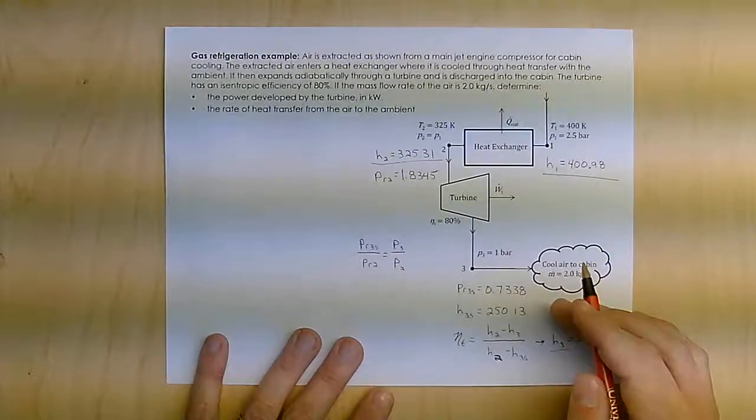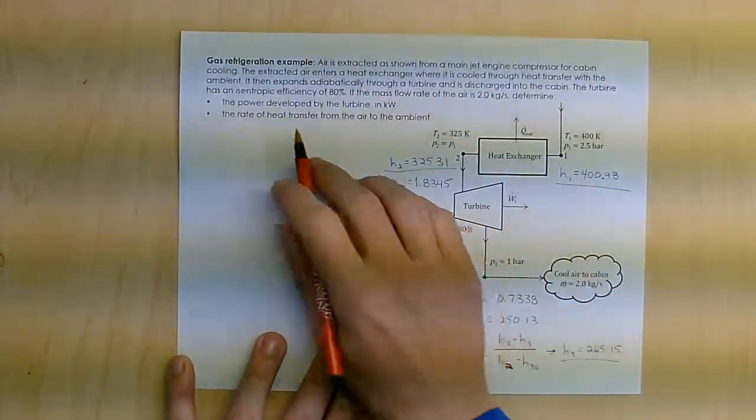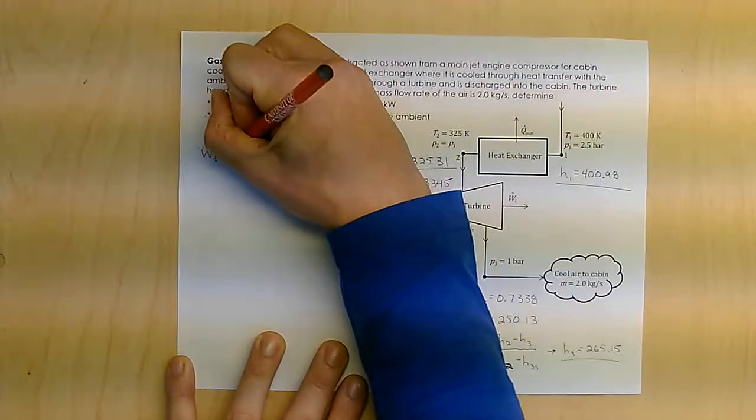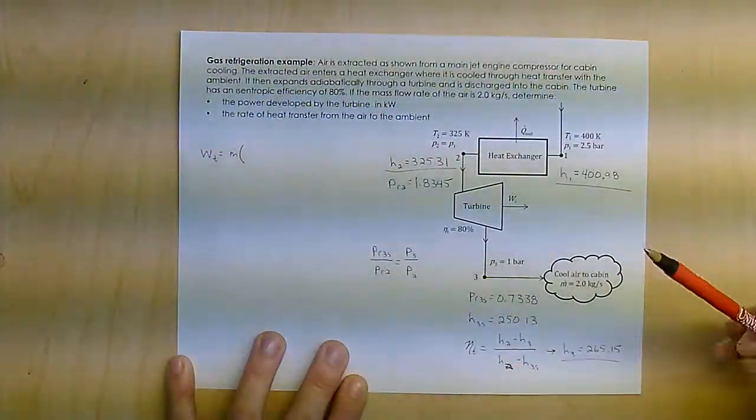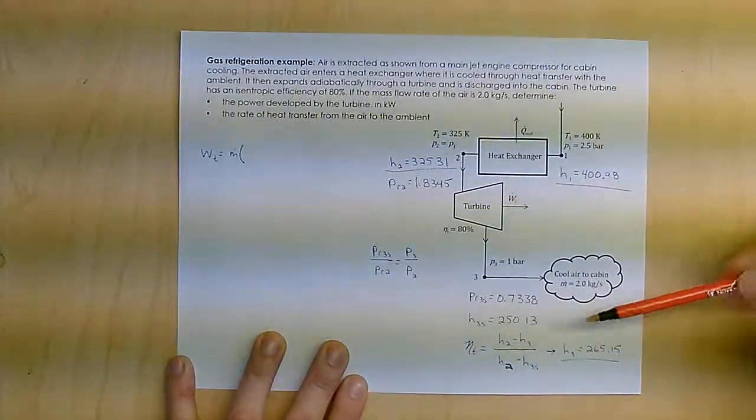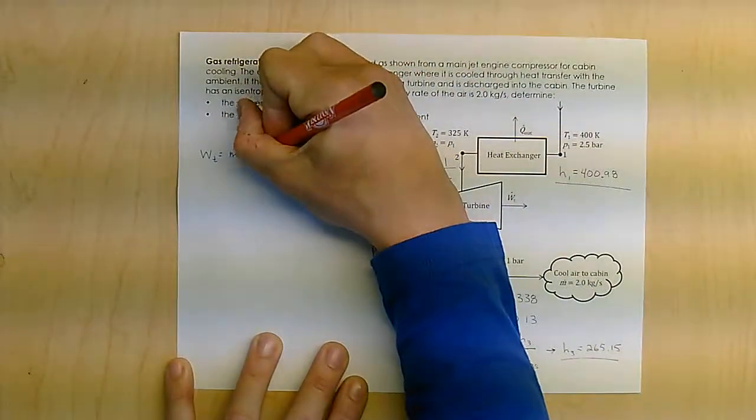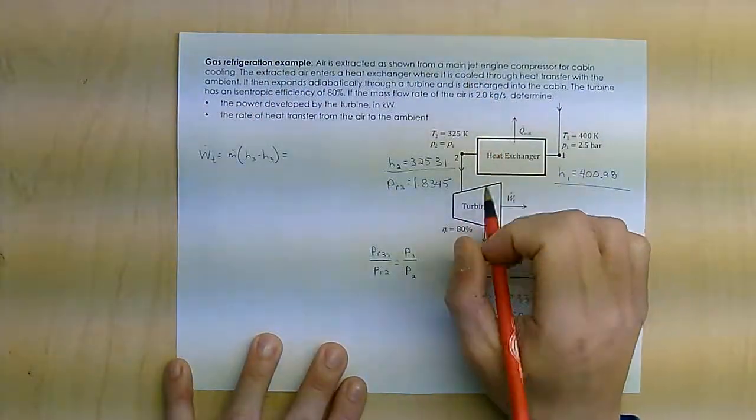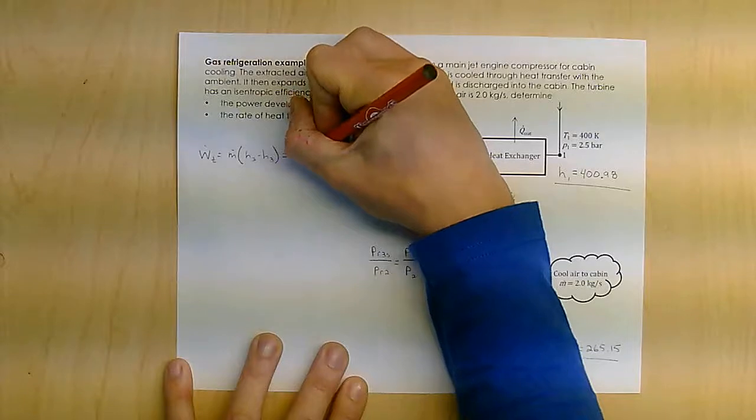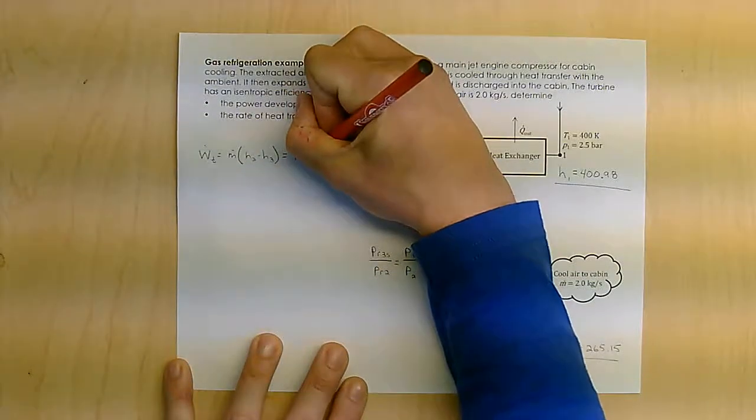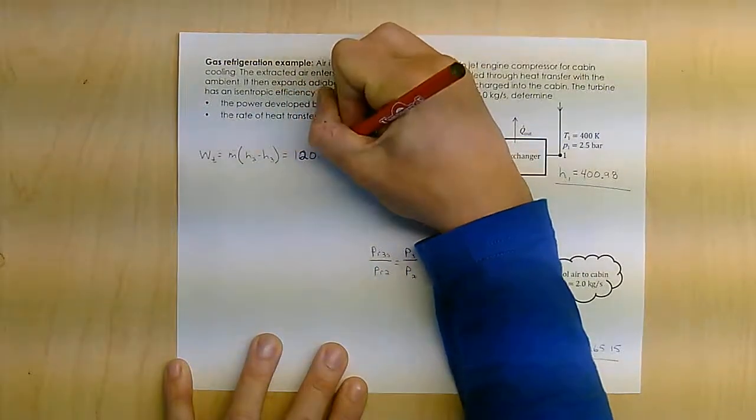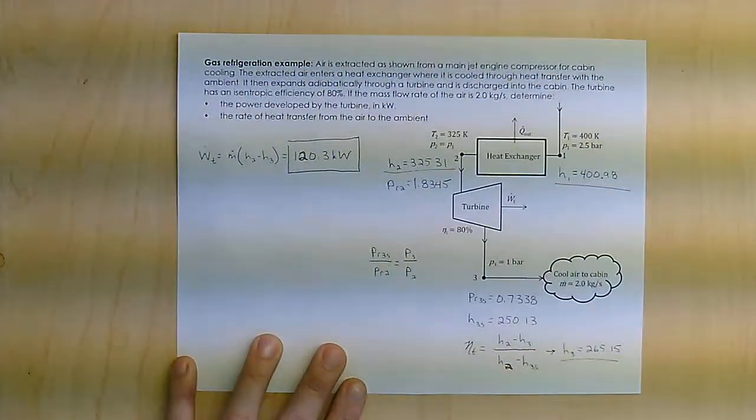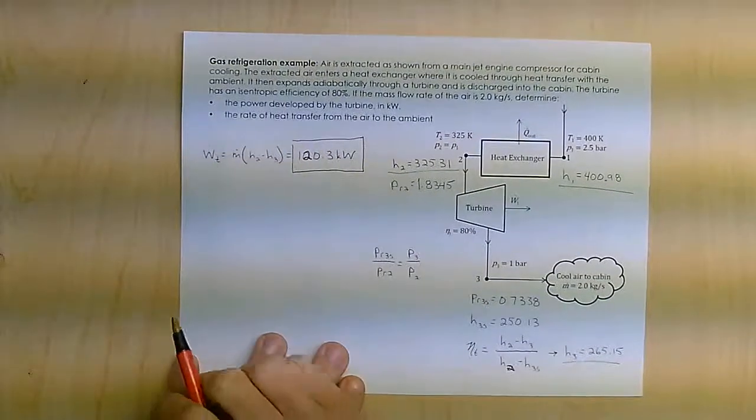Now I can calculate whatever it is I'm trying to find. I know the mass flow rate, so I can easily find the work in the turbine to be that mass flow rate times H2 minus H3. I get 120.3 kilowatts for the work of the turbine.